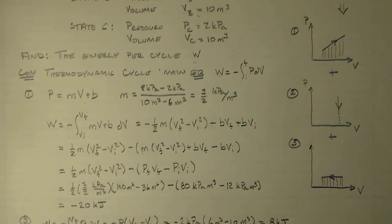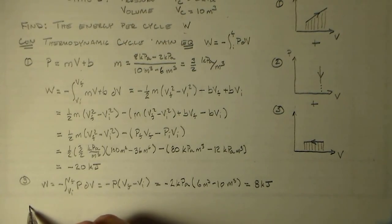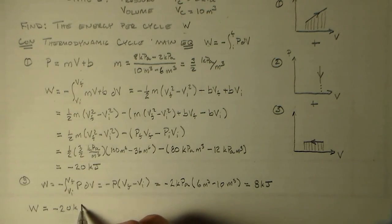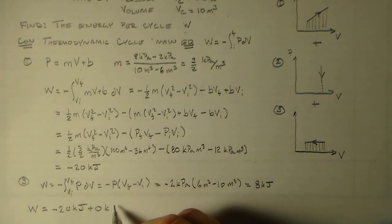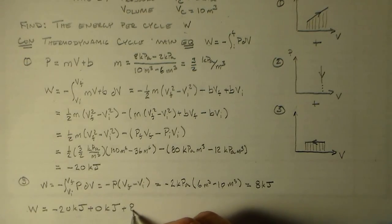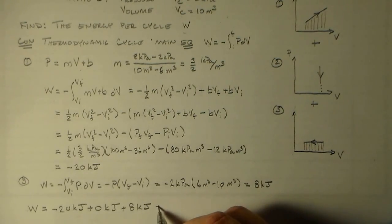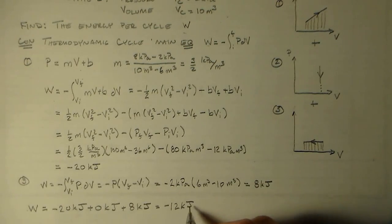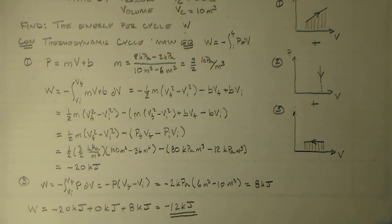And so the final answer, the total work, is W equal to minus 20 kilojoules plus zero kilojoules for part two plus 8 kilojoules for part three, and that equals minus 12 kilojoules. This is work done by the system on the rest of the world.